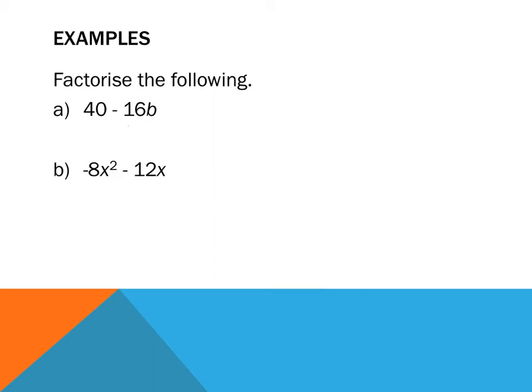What's half of 16? 8. Does 16 go into 40? No. So 1 goes, 2 goes, 3 doesn't, 4 goes, 5 doesn't, 6 doesn't, 7 doesn't, 8. So it's going to be 8. 8 is going to be my highest common factor. Then I put the brackets. See how I've drawn the brackets already? That's what I want you to do.